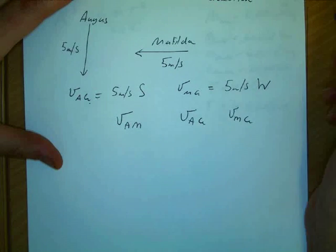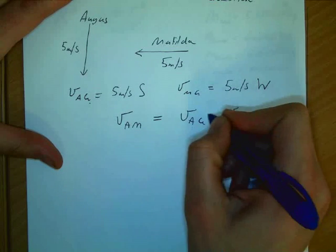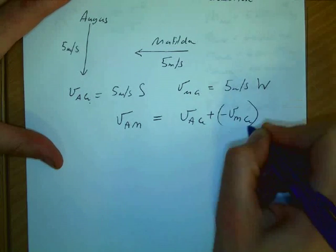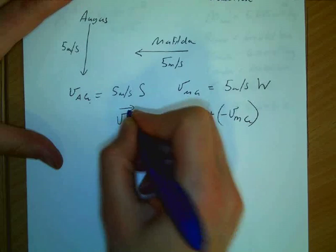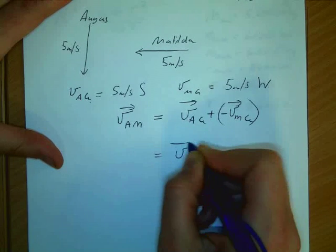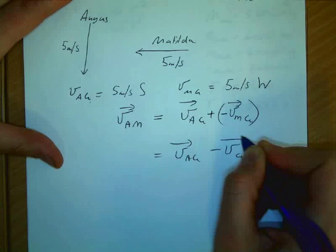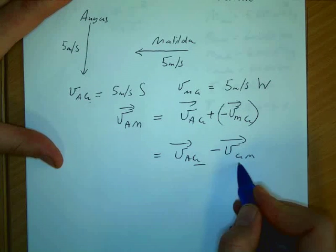So how do we do it using our... VAM is equal to VAG plus negative VMG. Excellent. And negative VMG, it's the same as minus VGM. And now we've got the G's in the middle there. That's what we wanted.